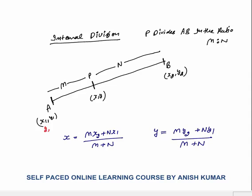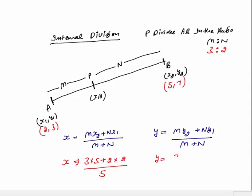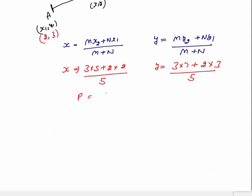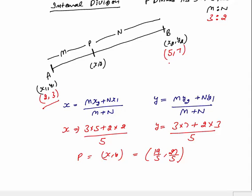For example, let's say point A is (2, 3) and point B is (5, 7). We need to find the coordinates of point P which divides AB in the ratio 3 is to 2. The X coordinate would be M=3 times X₂=5, that is 3×5, plus N=2 times X₁=2, all divided by M+N=5, giving 19/5. The Y coordinate would be 3×7 plus 2×3 divided by 5, giving 27/5. So the coordinates of point P are (19/5, 27/5).